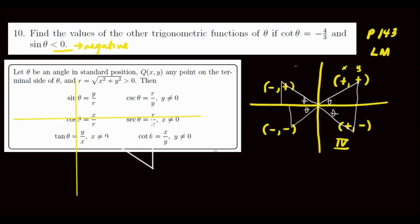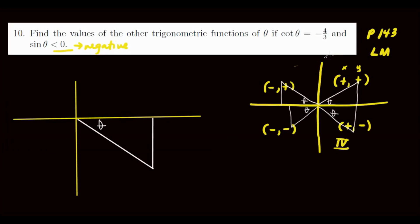The coordinate of the point is (4, negative 3), because sine must be negative in quadrant four. The lengths of the sides are three and four. Using the Pythagorean theorem — this is a right triangle — the Pythagorean triple is 3, 4, and the hypotenuse must be five. So r equals five.